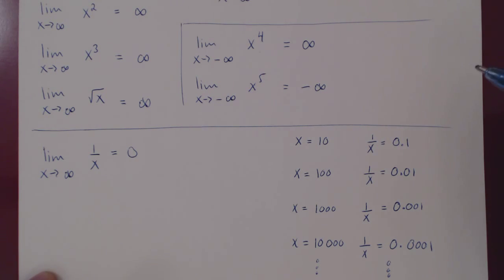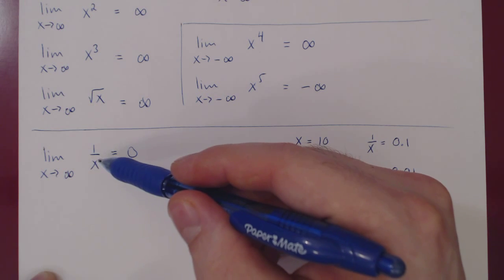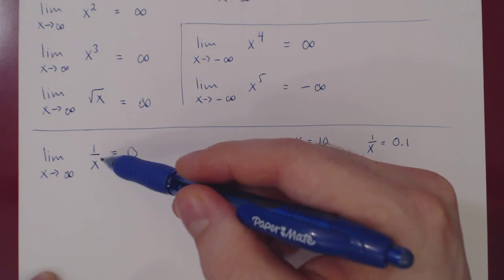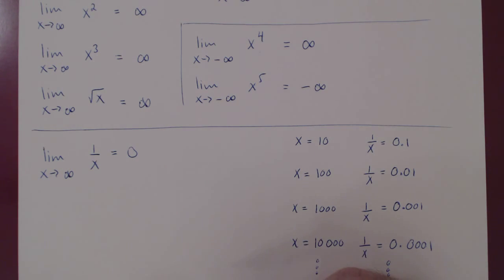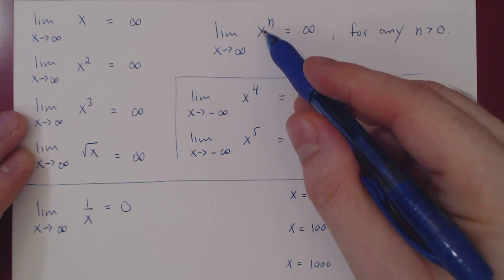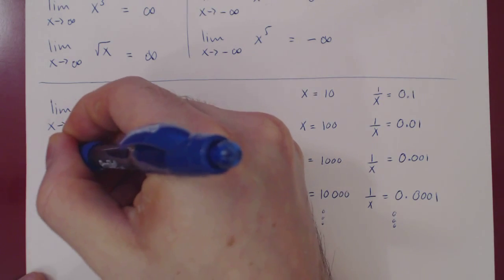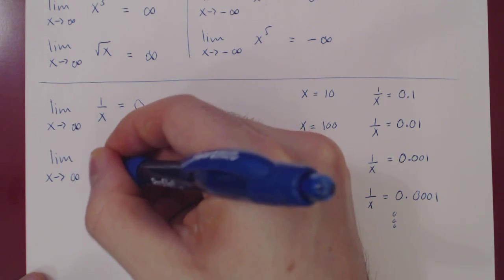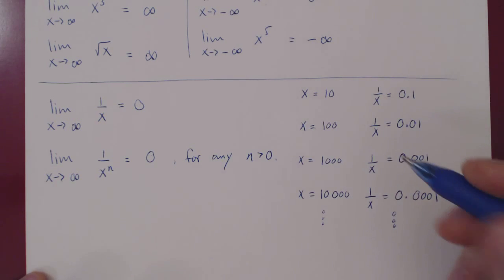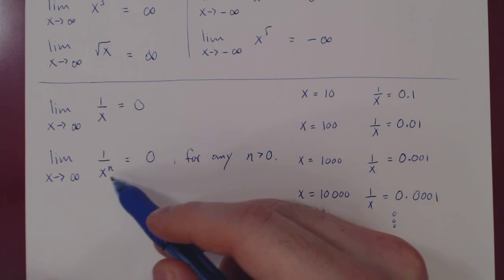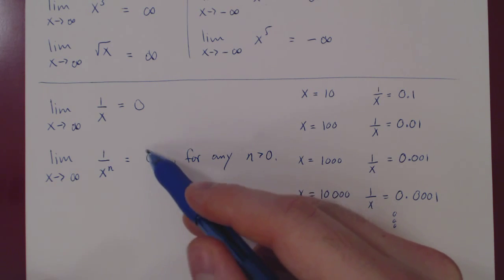This is very intuitive: if you divide a fixed constant by something very big, you get something very small. So as your denominator blows up to positive infinity, the fraction shrinks to 0. The same goes for any positive power of x — as x goes to positive infinity, x to any positive power also goes to positive infinity, so the reciprocal will go to 0.